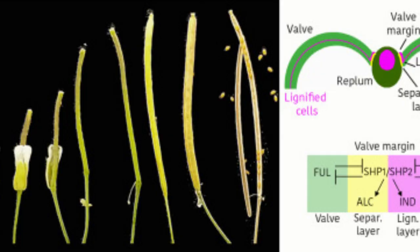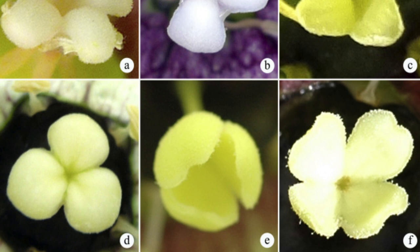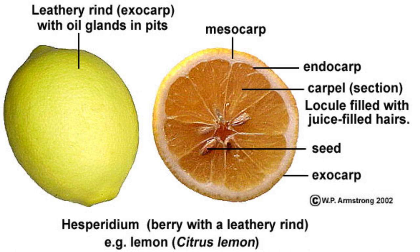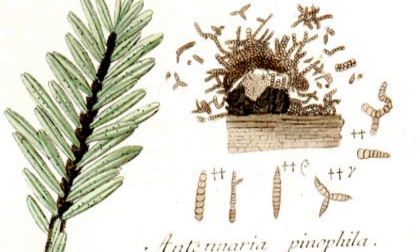Regardless of the type of locule, the role of these compartments remains the same: to support the survival and reproduction of the plant species. However, like all things in nature, they also have their disadvantages. For example, the presence of locules in certain fruits can make them more difficult to harvest and transport, as the fleshy compartments can easily be damaged during handling. Additionally, the storage of nutrients in locules can attract pests and disease, which can negatively impact the health and productivity of the plant.